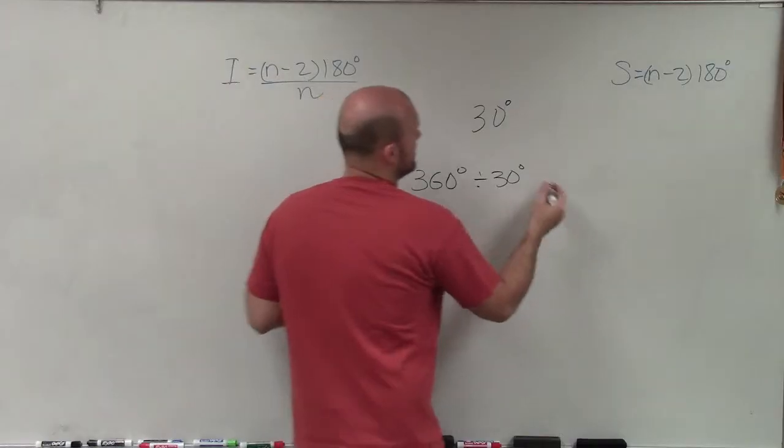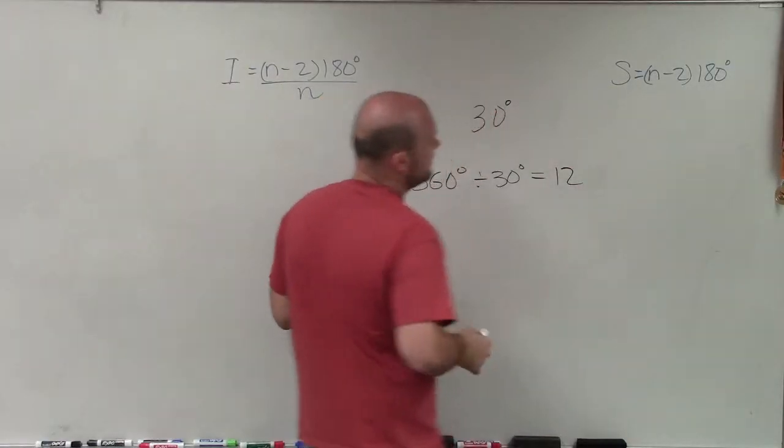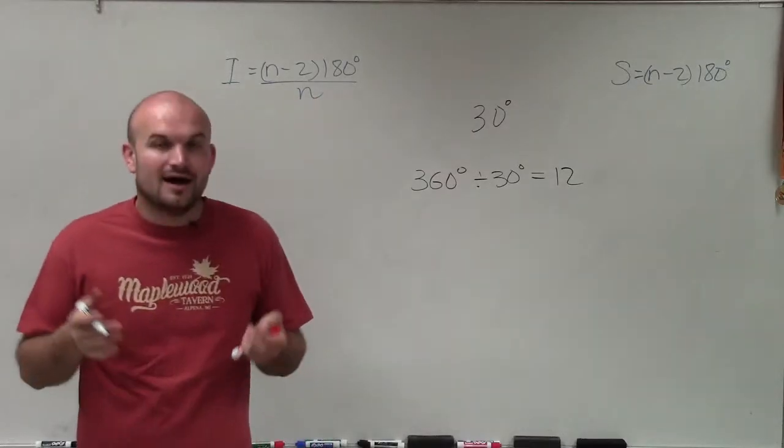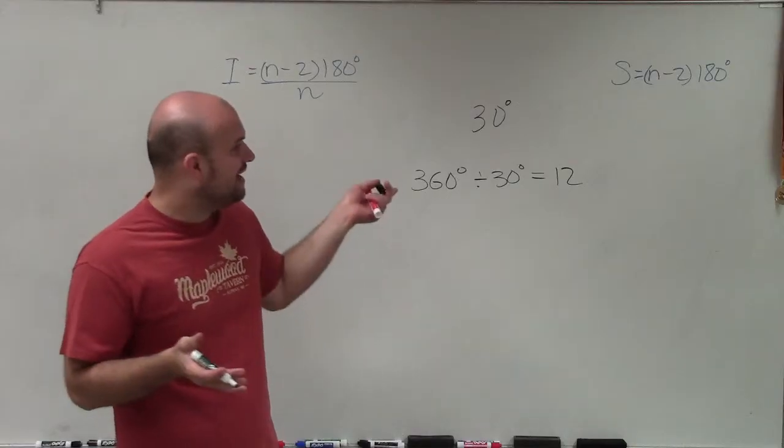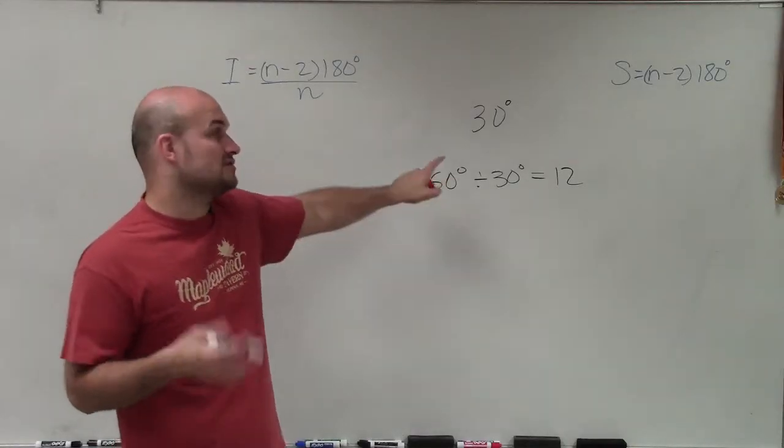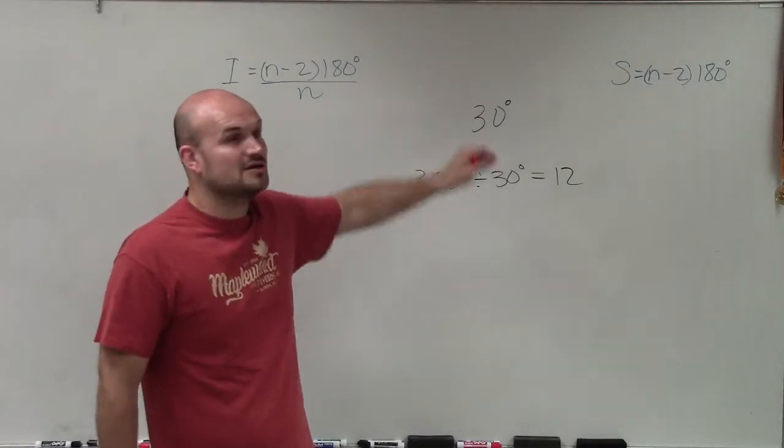So 360 degrees divided by 30 degrees equals 12. Therefore, I have a 12-gon that's going to have all exterior angles. A regular 12-gon is going to have all exterior angles of 30 degrees.